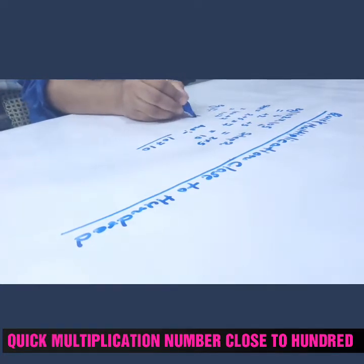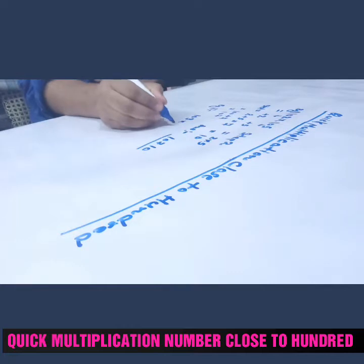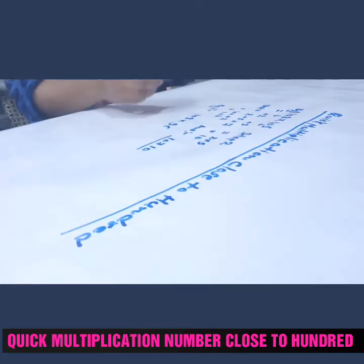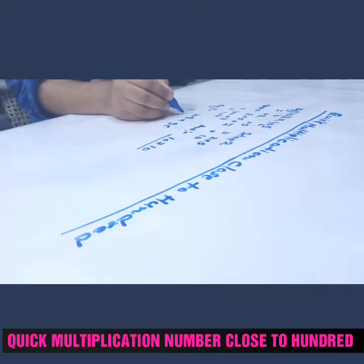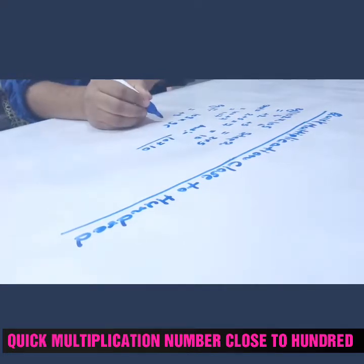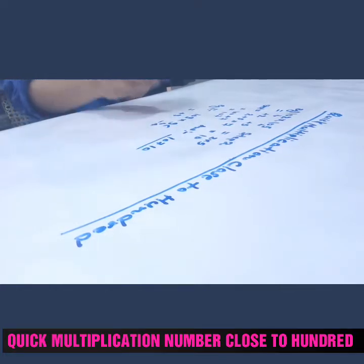103 into 96, two numbers. How we can do? This number is how much greater than hundred? Plus three. How much this one is less than hundred? This is minus four, it is less than. So first what we'll do, step one.